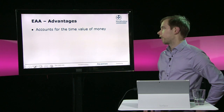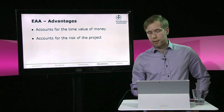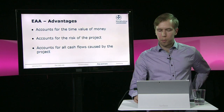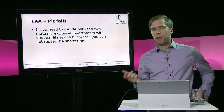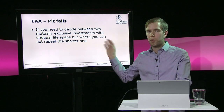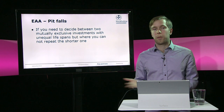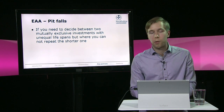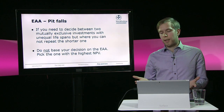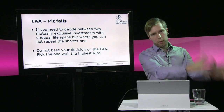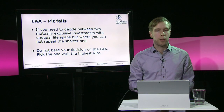Advantages of the equivalent annual annuity: it accounts for the time value of money, it accounts for the risk of the project because it has an interest rate, it accounts for all cash flows caused by the project, and it enables us to rank investments of unequal length if they can be replaced. However, remember: if you must choose between two mutually exclusive investments with unequal lifespans that cannot be repeated or replaced with a positive NPV, then you should not use EAA — in that case, NPV is the decision criterion. If it's a once-in-a-lifetime opportunity, take the one with the highest NPV.